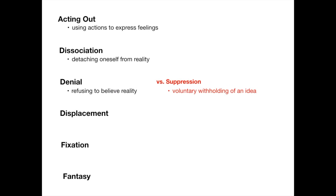Denial is refusing to believe reality. In denial, you refuse to believe reality but you're still aware of the thought you're refusing to accept. For example, a patient diagnosed with cancer tells their oncologist 'I can't believe this,' walks out, and refuses to acknowledge they have cancer — that's denial. Suppression, by contrast, is the voluntary withholding of the idea: someone says 'I'm just not going to think about it.' Someone in denial refuses to believe it's real; someone suppressing voluntarily takes it out of their brain without refusing or fully accepting reality.